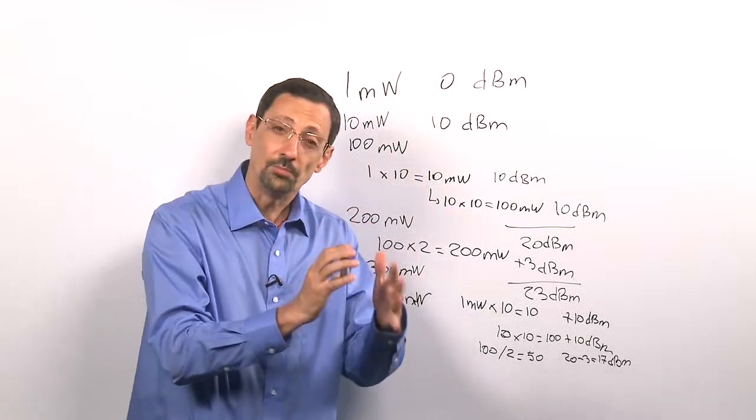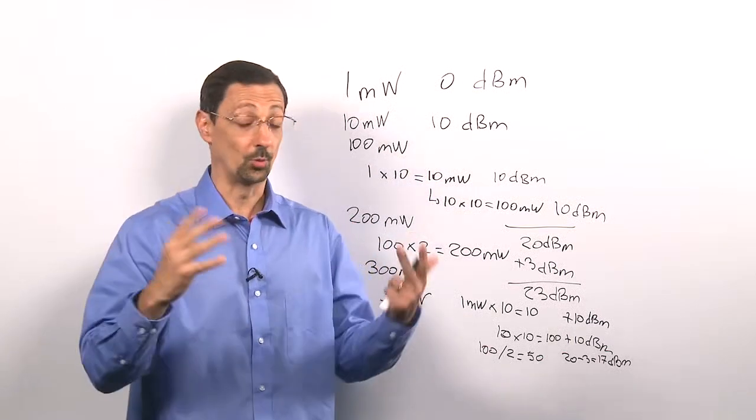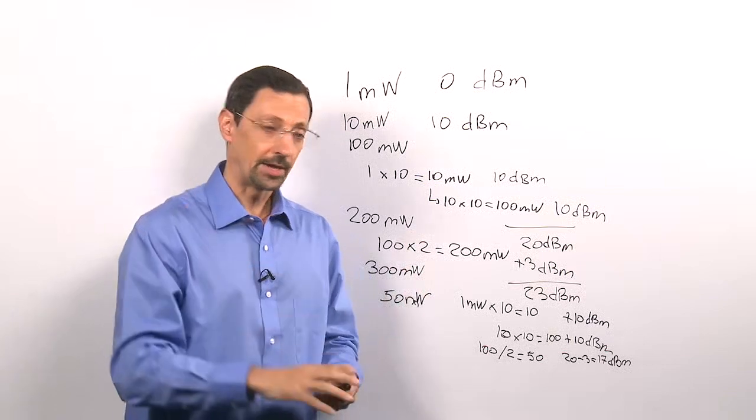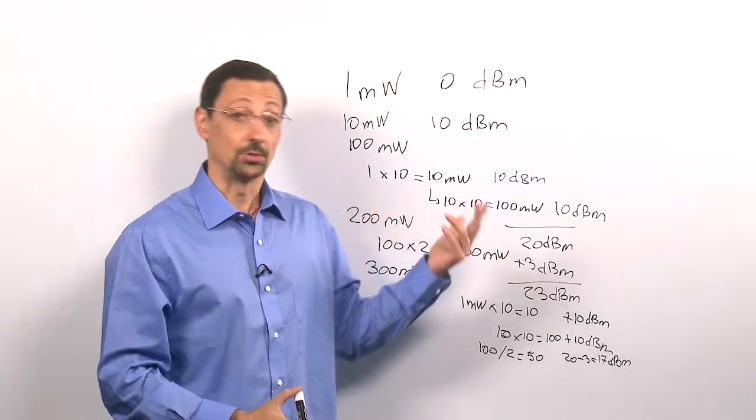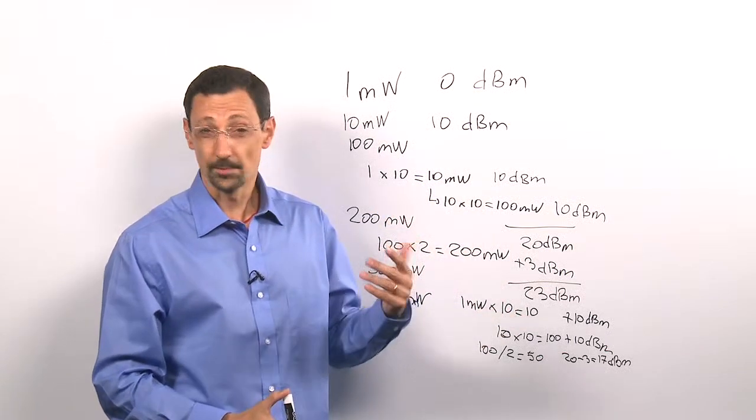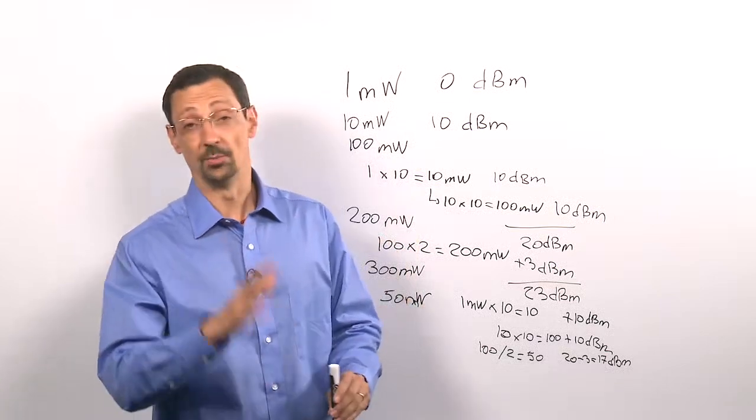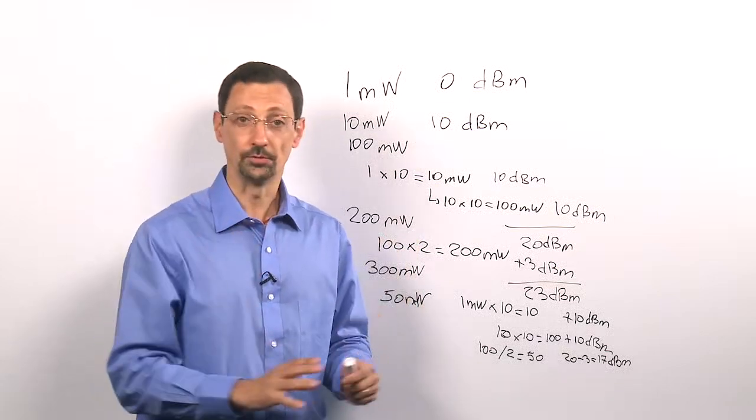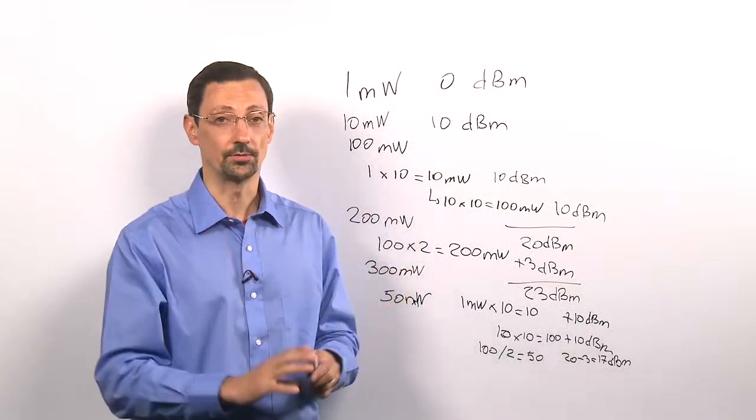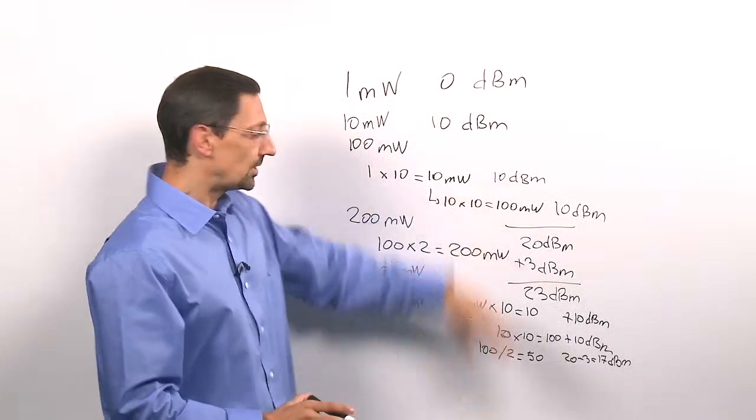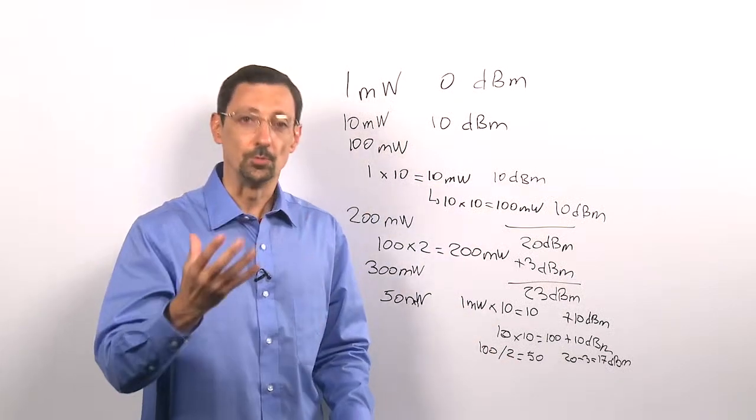So that mW to dBm conversion works that way. You take from the 1 mW world, and then you try to climb your way up to whatever number you need to achieve. Keep in mind, you always want to start with the 10s, because if you start with the 2s, you'll get into trouble. I can give you many examples of that, but don't even try. Go to the 10s, you'll be safer. All right, let me wipe this out and try the other way around. Try to convert dBm into mW.